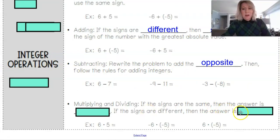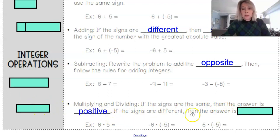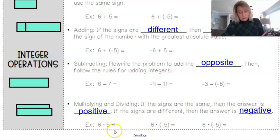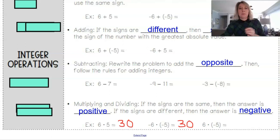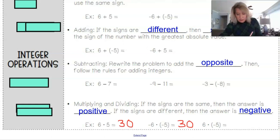For multiplying and dividing integers: if the signs are the same, the answer is positive; if the signs are different, the answer is negative. So 6 times 5 is positive 30, and negative 6 times negative 5 is also positive 30 — matching signs give a positive answer. But 6 times negative 5 is negative 30, like mismatched socks — different signs give a negative answer.